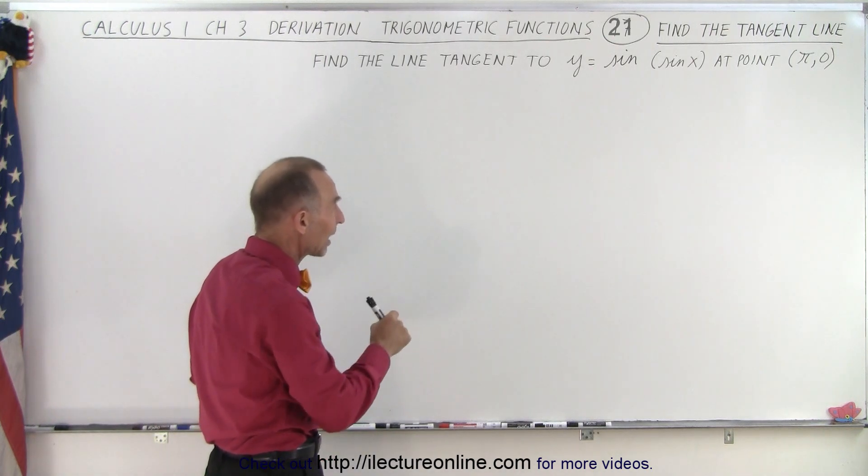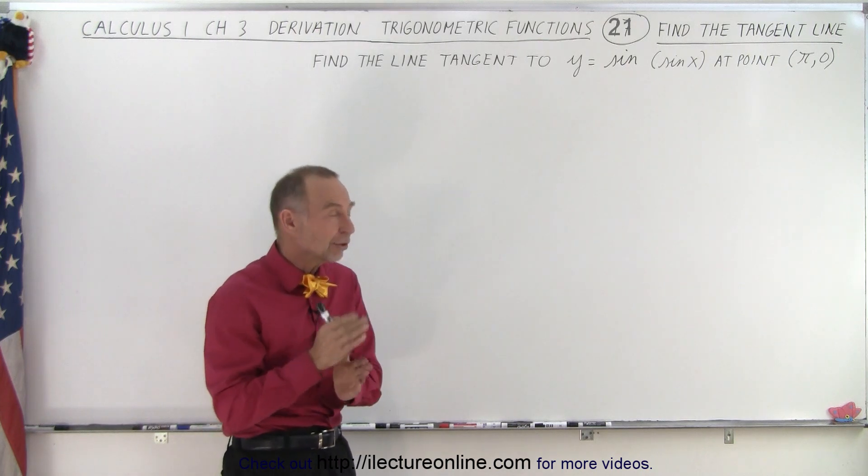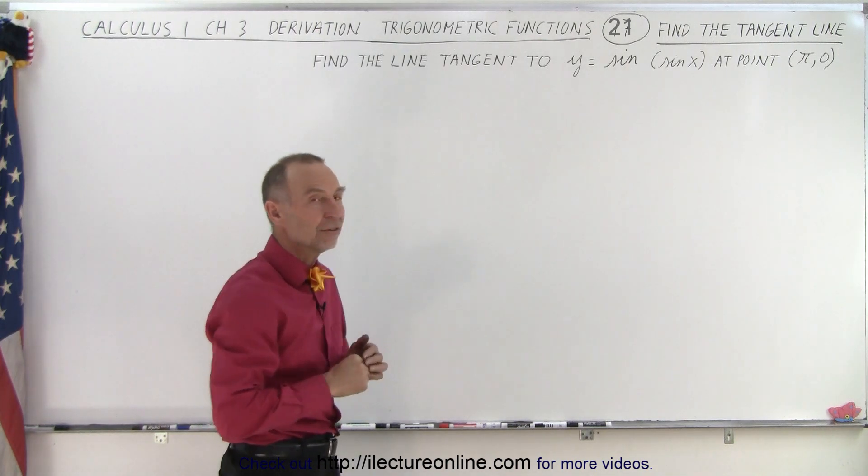We're given a function where y equals the sine of the sine of x, and we're trying to find the tangent line to that function at the point pi, 0.